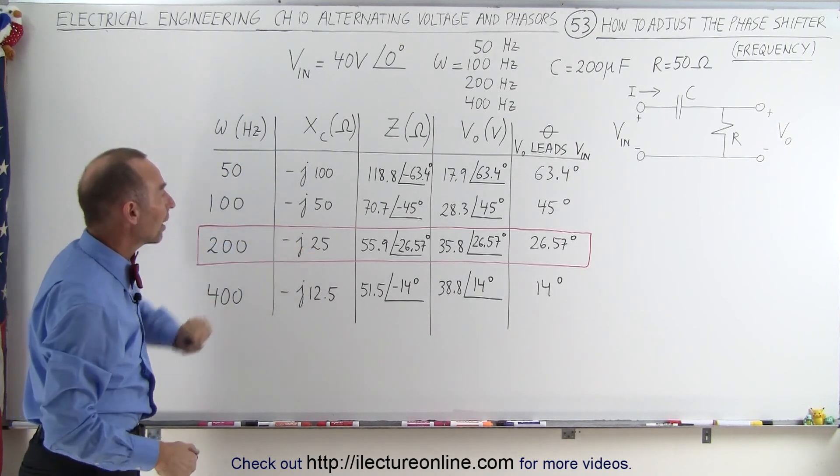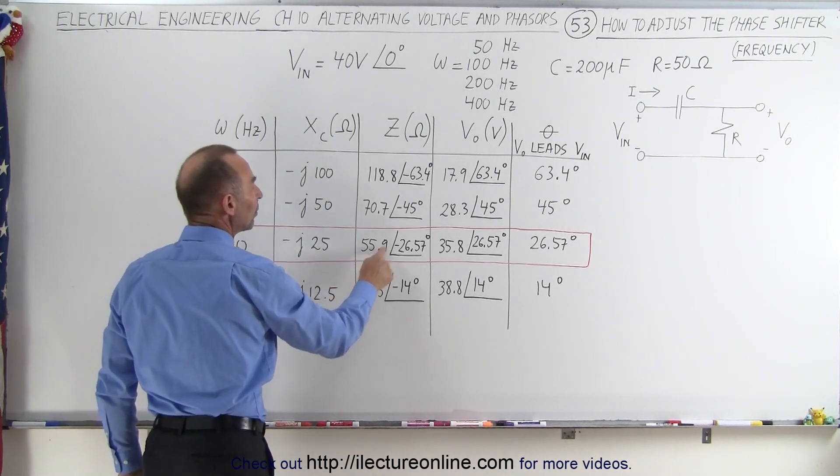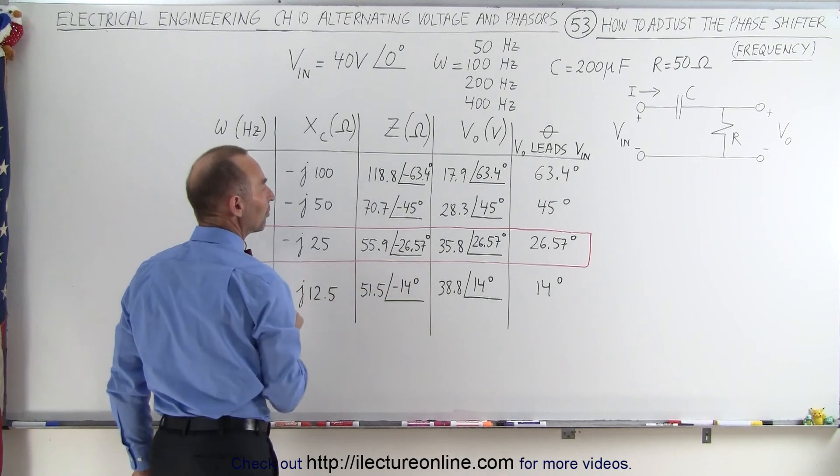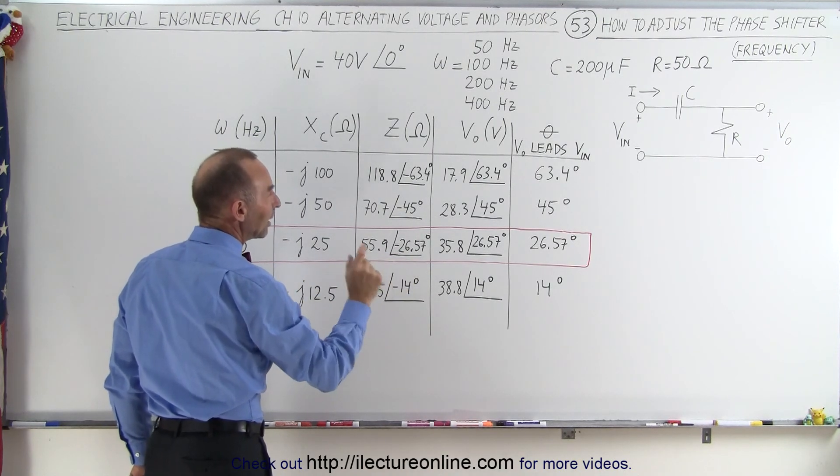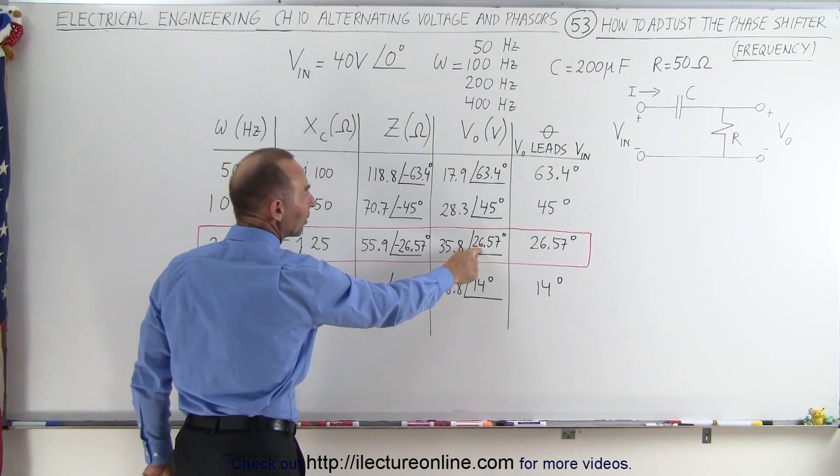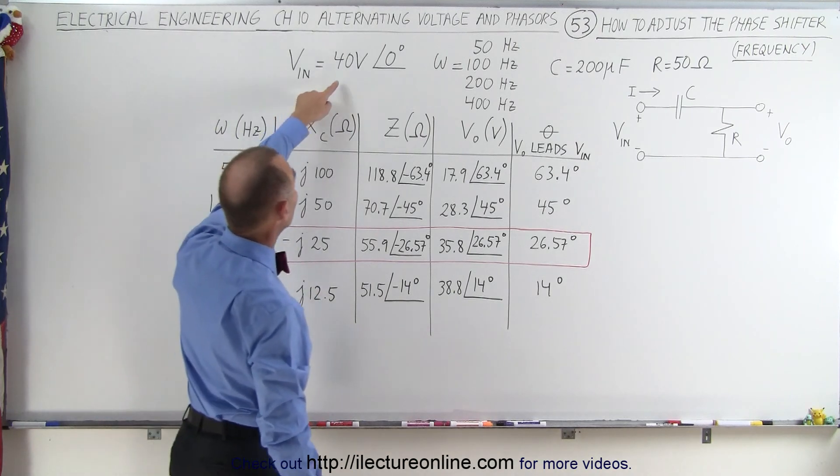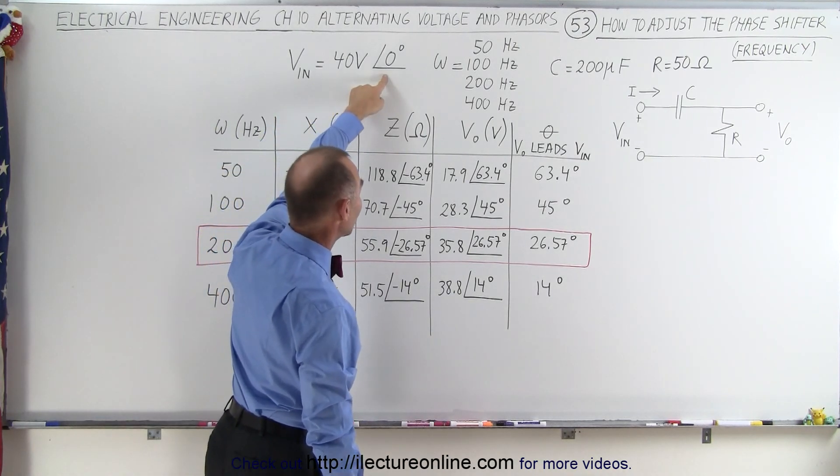That gave us an impedance of 55.9 with a phase shift of minus 26.57. Then if we calculated the output voltage, we got an output voltage of 35.8 with a phase angle of 26.57 relative to the input voltage, which was 40 volts at a zero degree phase.